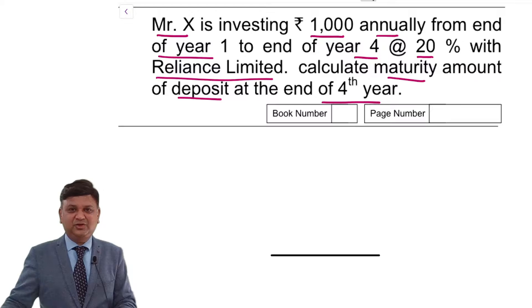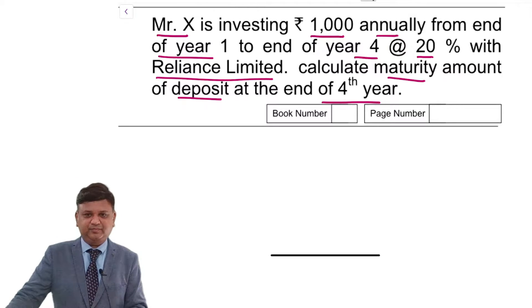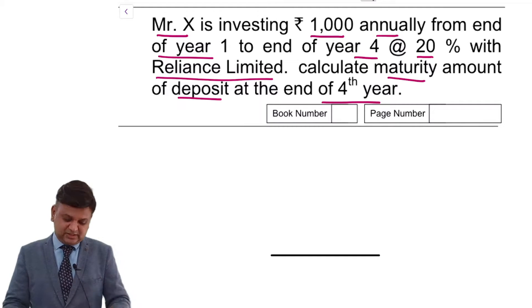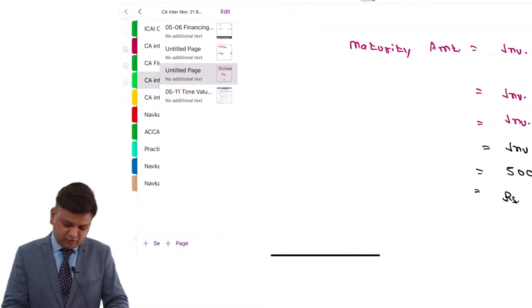Try to calculate the answer on your own. Now, first of all, let us have a discussion how to do the answer. Then we will execute the answer. The question says that Mr. X is investing Rs. 1000 annually from end of year 1 to end of year 4.